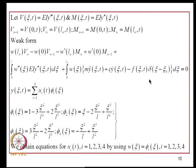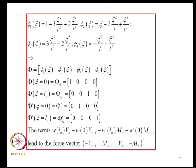Our job is to approximate the field variable in terms of nodal degrees of freedom and suitable interpolation functions. There are 2 nodes and 2 degrees of freedom per node, so we need 4 generalized coordinates. As before, we take cubic polynomials; substituting into the weak form and using weight functions Phi_i for i = 1, 2, 3, 4, we get a set of 4 equations which lead to the required equations for the nodal degrees of freedom U_i.